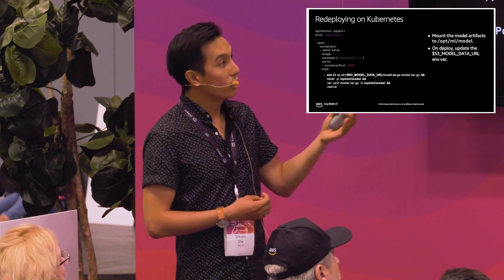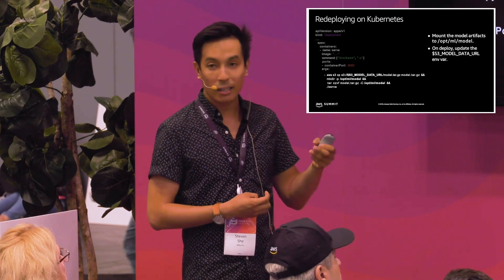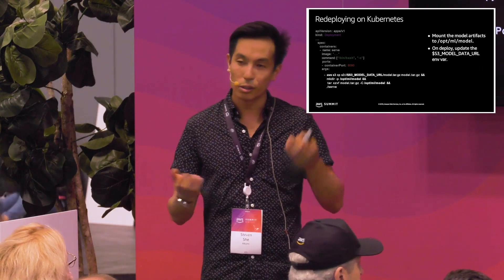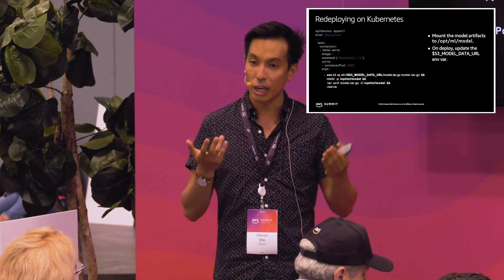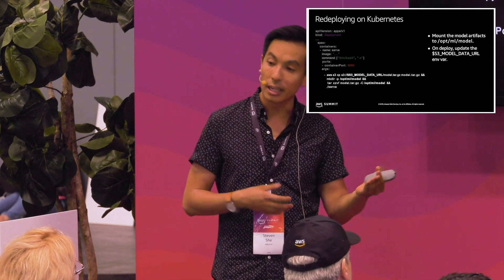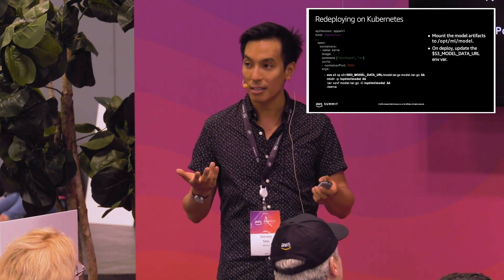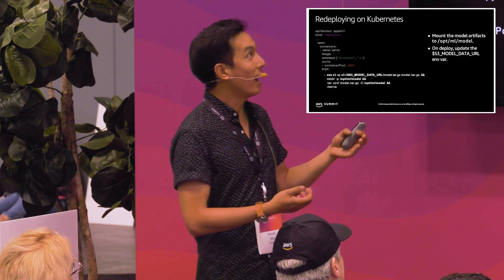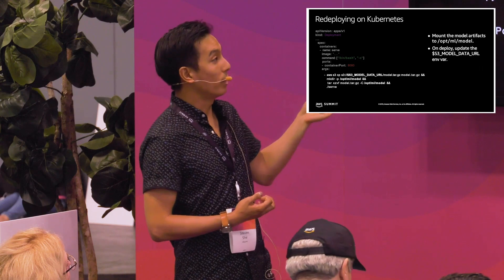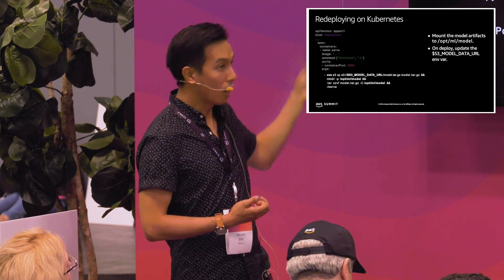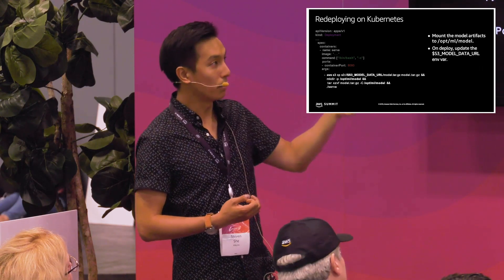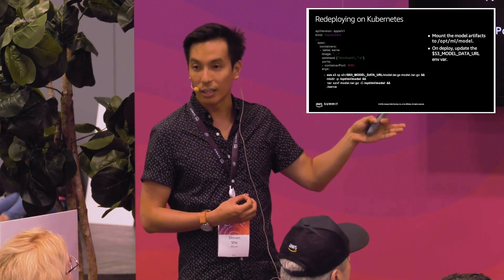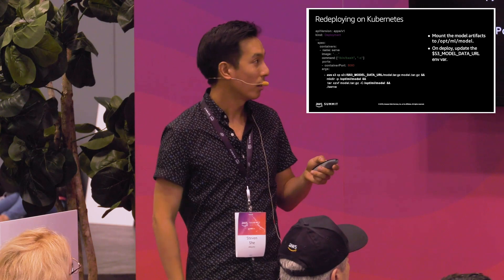On Kubernetes, we use a config map to store the latest S3 path to share between the training and deployment process. From that, the training job and the prediction deployment can actually communicate with one another.